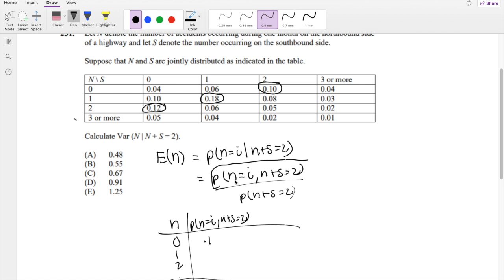How about this one? When is probability of n equal to 1 and n plus s equals 2? Well, that's 0.18, the one we circled. And likewise, the last one's going to be 0.12.